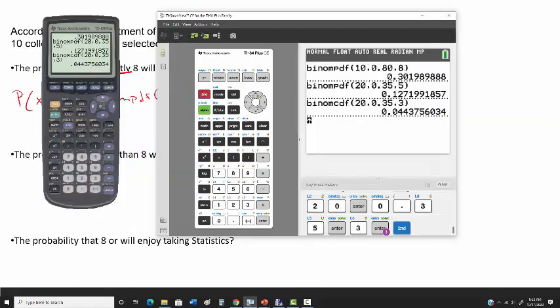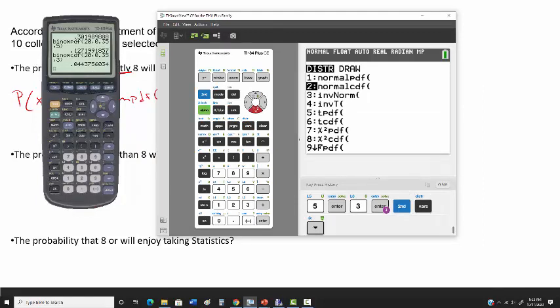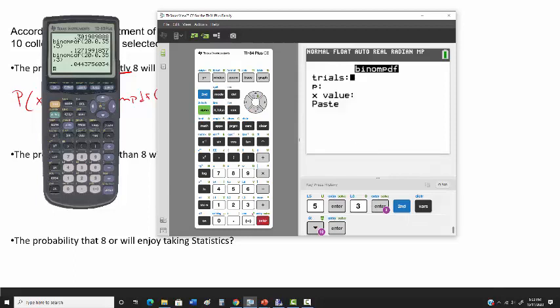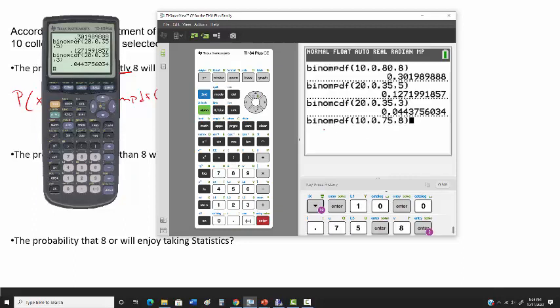So second function DISTR. Binome PDF. We have 10, 0.75, and we want exactly 8 of the 10. So you can do it like this, right? You just have to plug it in that way over here, but we'll just go with this TI-84 from here on out. And you can see it's 0.2816 when I round it.